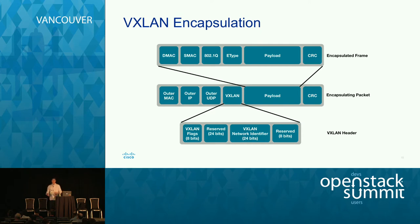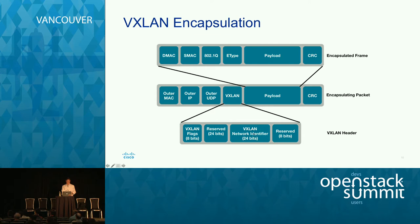Here's what VXLAN encapsulation looks like. You take an L2 packet from your VM on your hypervisor — it has its destination MAC, source MAC, 802.1Q label, Ether type, payload, and so on. You take all of that and put it into an encapsulating packet. A VXLAN header is added on top, and the key field is the VXLAN network identifier, or VNI, which gives us 16 million unique virtual networks. The encapsulating packet has an outer UDP header, outer IP header, and outer MAC with source and destination addresses.